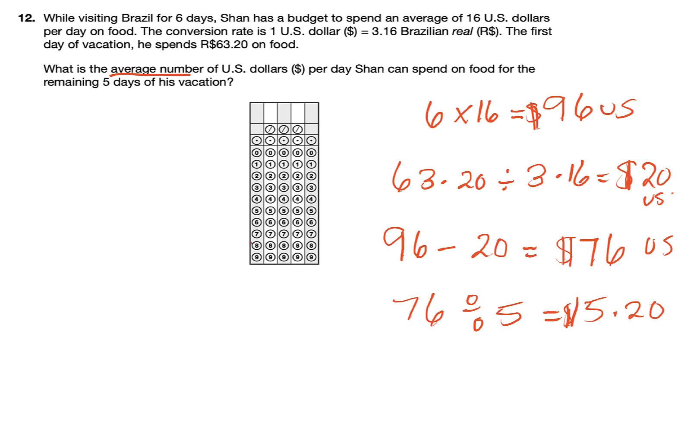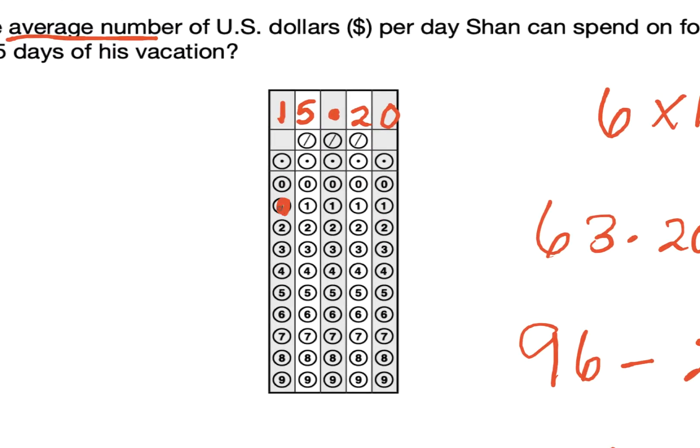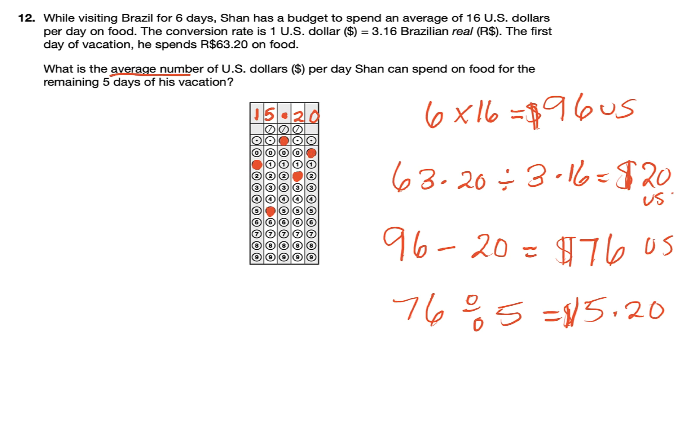How much money does he have left? We're going to take the 96, subtract the 20. He actually only has $76 US dollars remaining. Out of that $76, they want to know what is the average number he can spend per day. He has 5 days left. We're going to take 76 and divide that by 5. He can only spend $15.20. I'm going to put everything in the grid: 15.20.